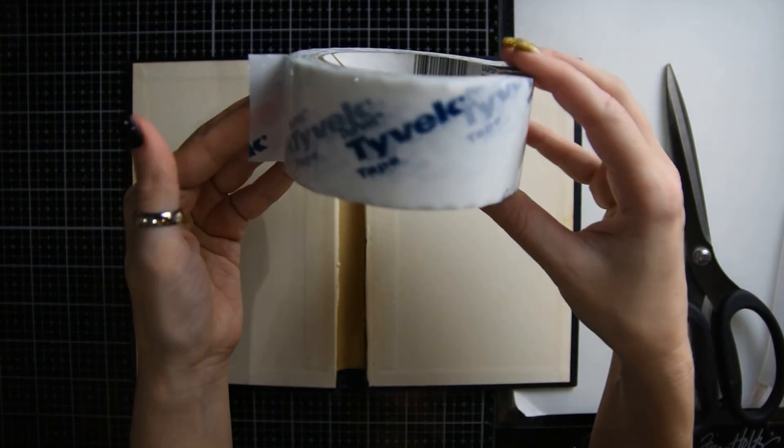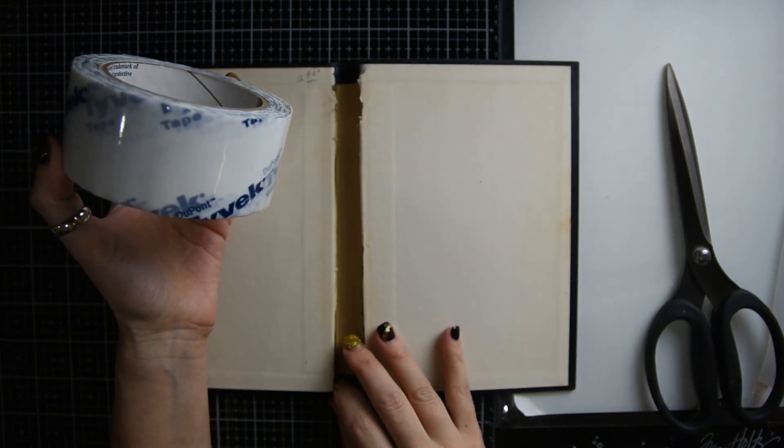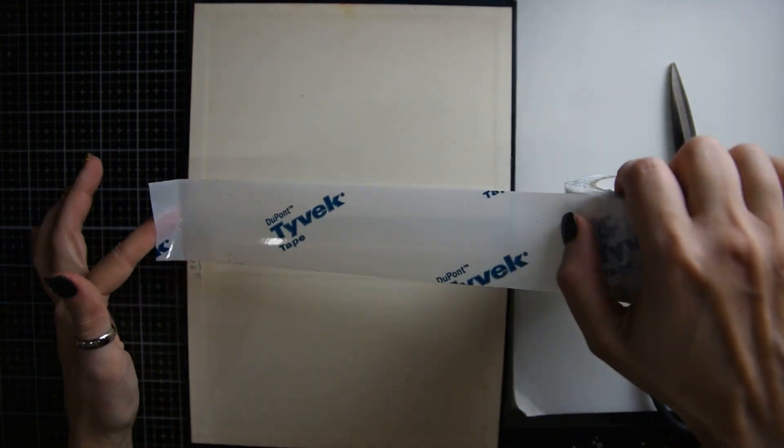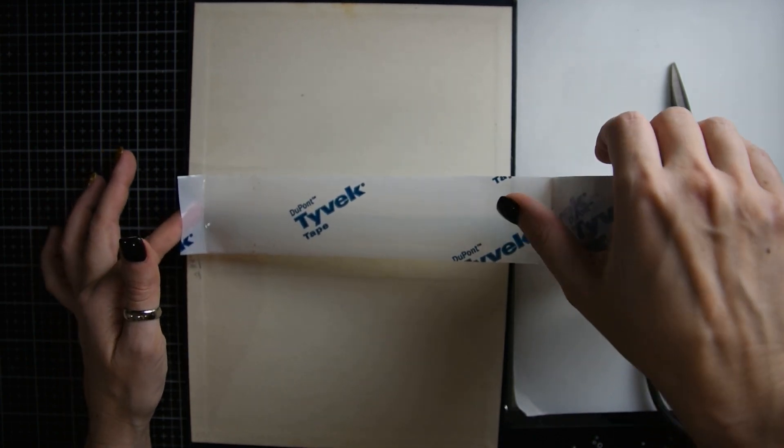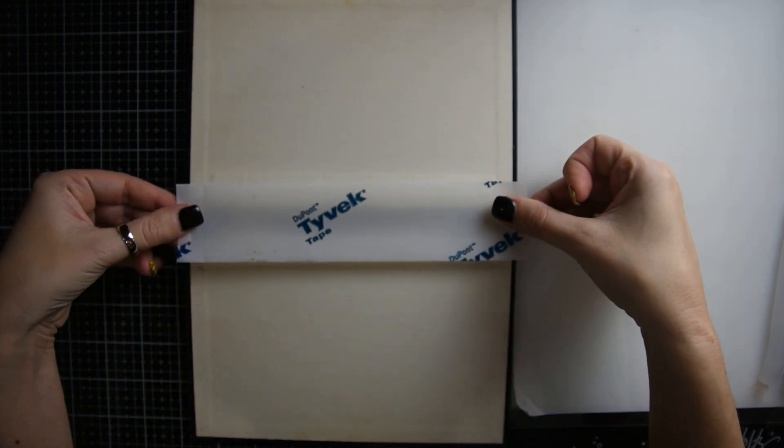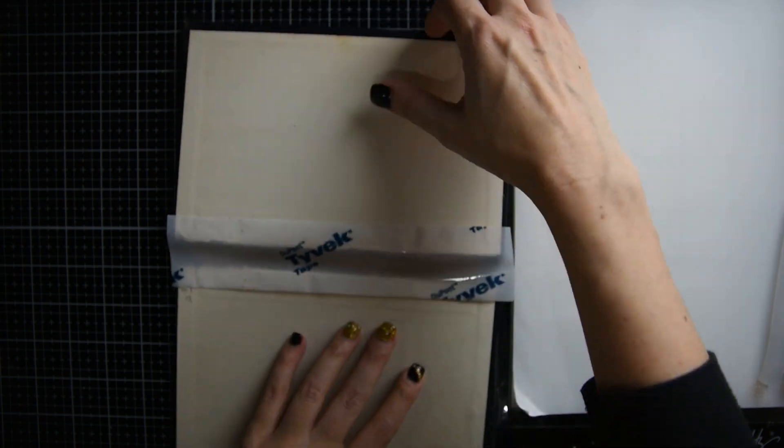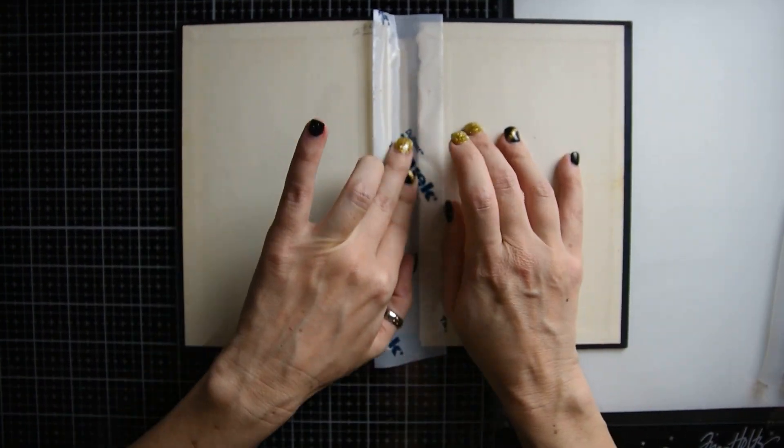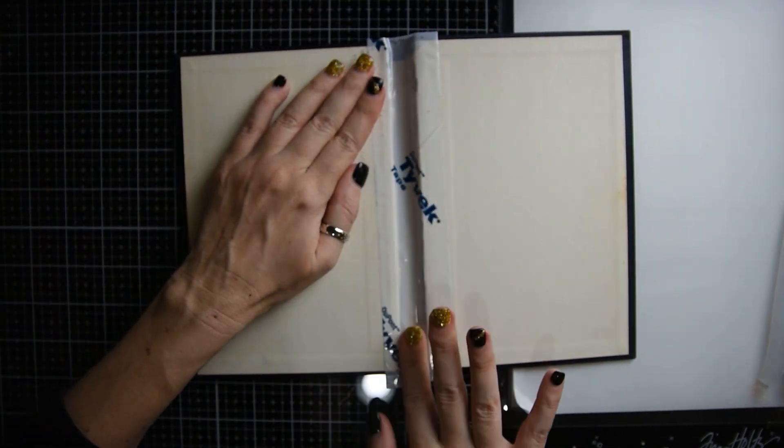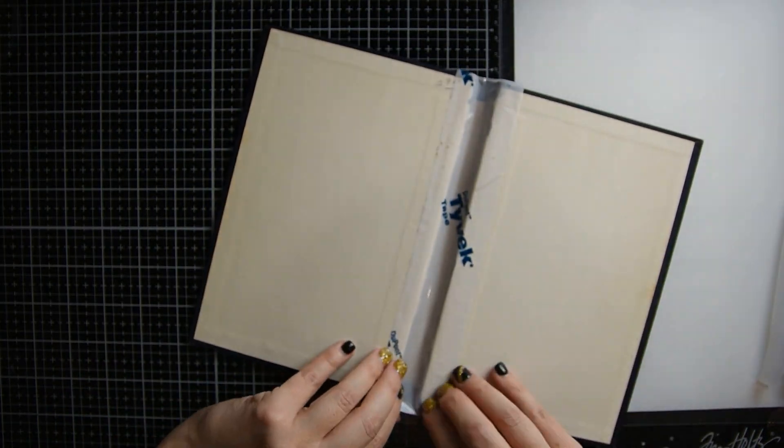So the next step is to get some Tyvek tape and take a piece of that Tyvek tape and put it right down the center. This stuff is really strong tape and it works really well to strengthen your spine. And then just take your scissors and cut any excess off.